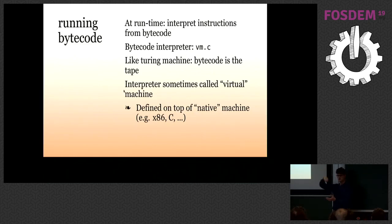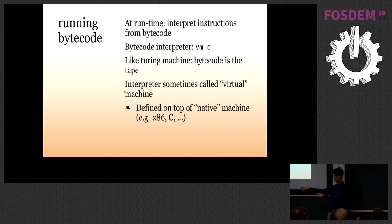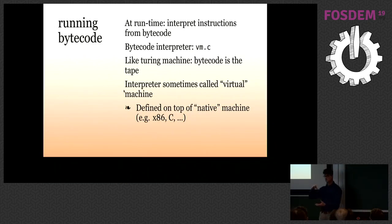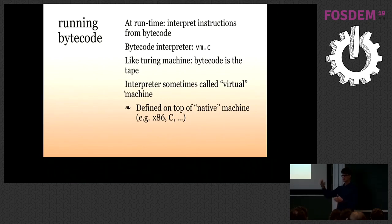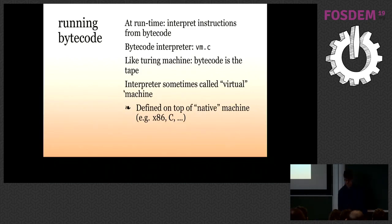The green phases — expansion, optimization, code generation to bytecode — all happen at compile time. At runtime, you just interpret that bytecode. It's a bytecode interpreter interpreting your program, like a virtual machine where the machine is GUILE's VM and the strip of instructions is your bytecode, implemented by VM.c. It's called a virtual machine because the instructions aren't native machine instructions — they're at a higher level. As GUILE develops, we keep dropping these levels down and down.